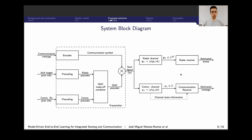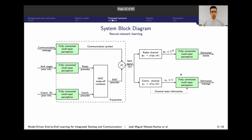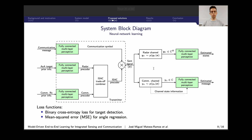As a first step to solve our problem, we can use neural network learning. We consider all green-colored blocks as neural networks. As loss functions, we consider different losses for sensing and communication: the binary cross-entropy loss for target detection, mean square error for angle regression, and categorical cross-entropy for message estimation. We combine all these losses to obtain good sensing and communication solutions.